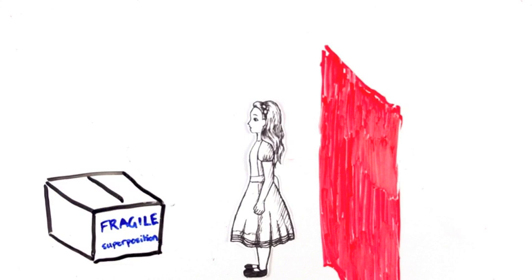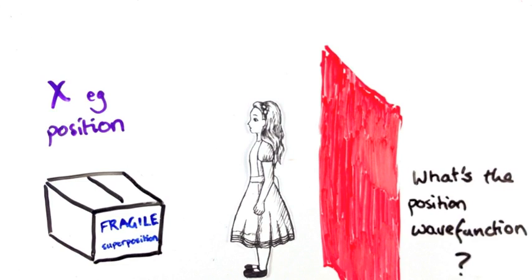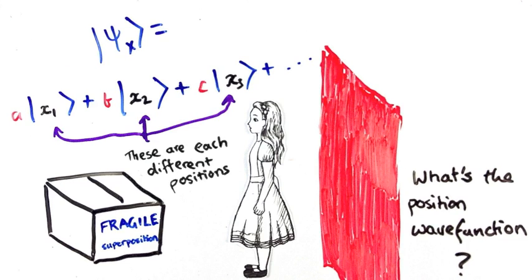Say I have a particle and you're interested in observable x for that particle. Again, that can be position. I can't tell you where the object is, the best I can do is tell you the wave function, right? Because if you know that, you'll know the probabilities for all the places it can turn up when measured.